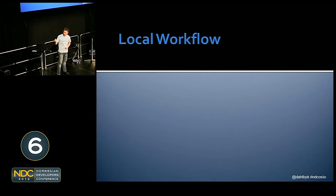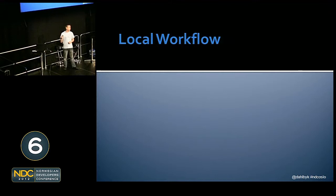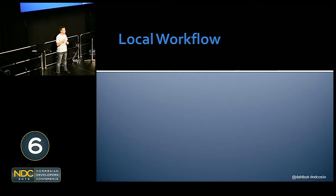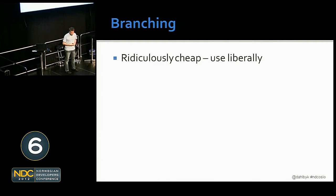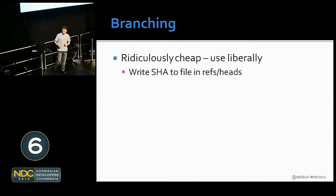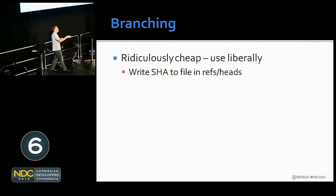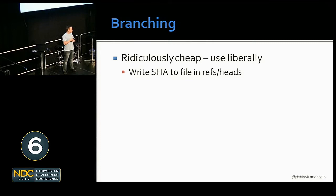Let's talk about local workflow. Distributed version control in general has lots of advantages, but local workflow is where Git in particular stands out. Rule number one: branch religiously. It's ridiculously cheap, so do it as much as you want. Branching is as simple as writing 40 characters to a file — that's all a branch is. If you want to save where you are just in case you want to get back there easily, make a `branch-back`. When you're done with it, just delete it.